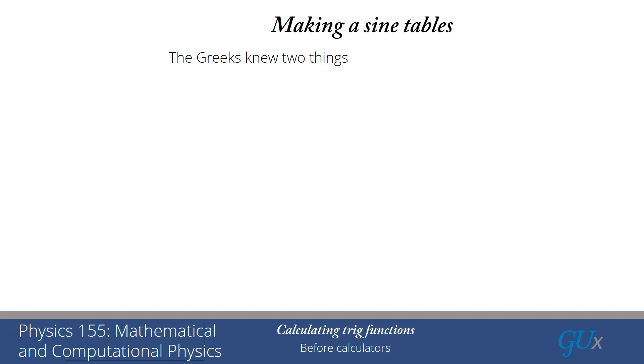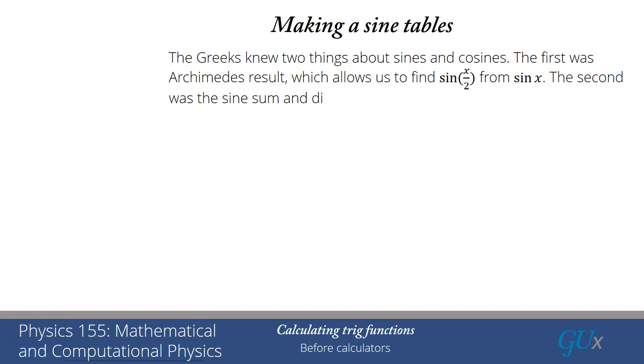The Greeks only knew two things about sines and cosines, but you can do a lot with these two things that they knew. They knew Archimedes' result, which allows them to find the half angle, or sine of x over 2, if they knew what sine x was. The second thing that they knew were the sine sum and difference formulas, and that would be sine of x plus or minus y is equal to sine x times cosine y, plus or minus cosine x times sine y.